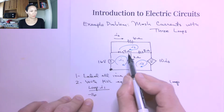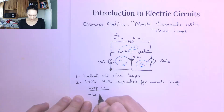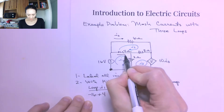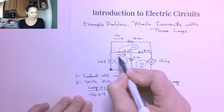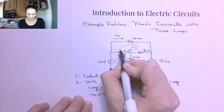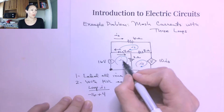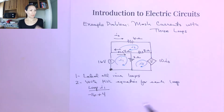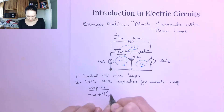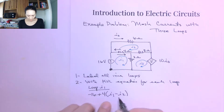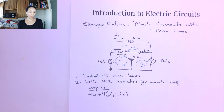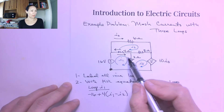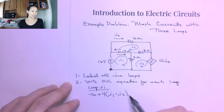I continue walking around my I1 loop. The next thing I encounter is the 4 ohm resistor. In my equation, that will be plus 4 times the current going through it: I1 is in one direction and I2 is in the opposite direction, so I1 and I2 mesh at this 4 ohm resistor and subtract, giving I1 minus I2. Since we're walking the I1 loop, I1 is our positive one.